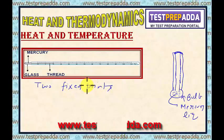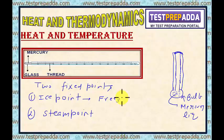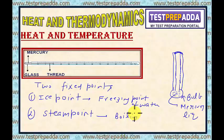The two fixed reference points are: number one, the ice point — which is the temperature at which water freezes, that is the freezing point of water — and number two, the steam point — which is the boiling point of water, the temperature at which water boils.